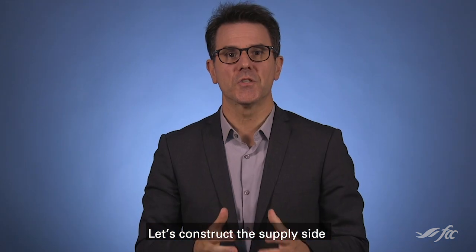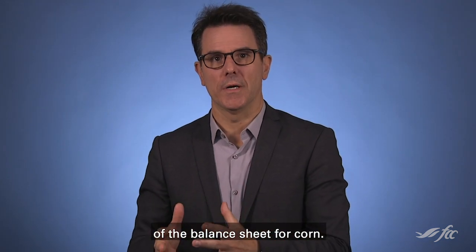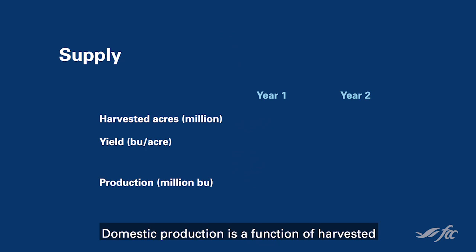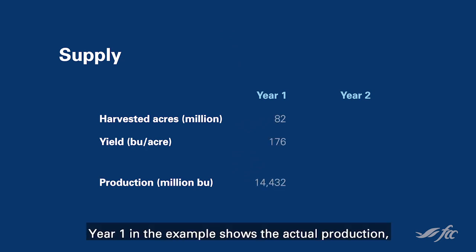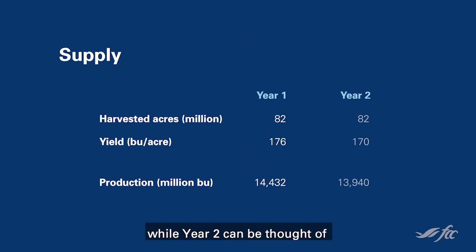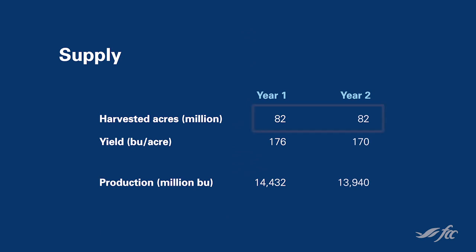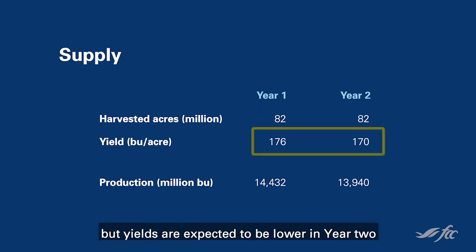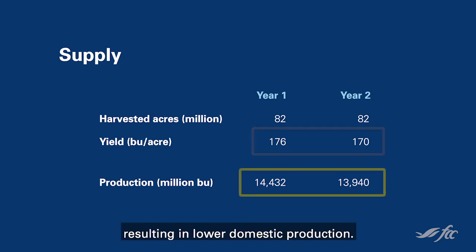Let's construct the supply side of the balance sheet for corn. Domestic production is a function of harvested acres and yields. Year 1 in the example shows the actual production, while year 2 can be thought of as expectations about production in year 2. In this example, you can see that harvested acres are identical, but yields are expected to be lower in year 2, resulting in lower domestic production.